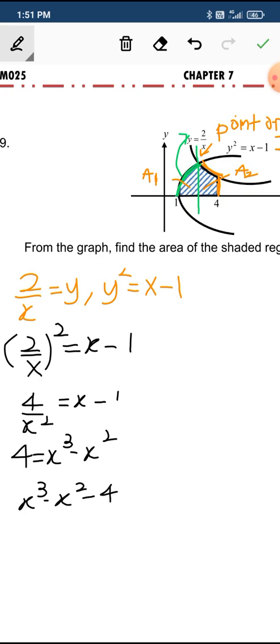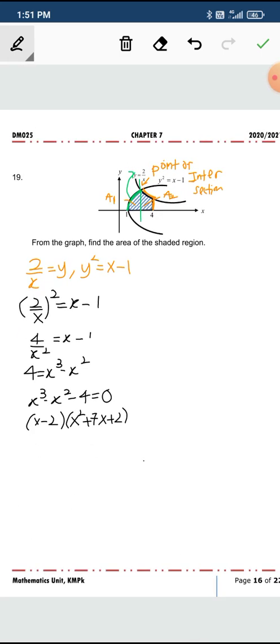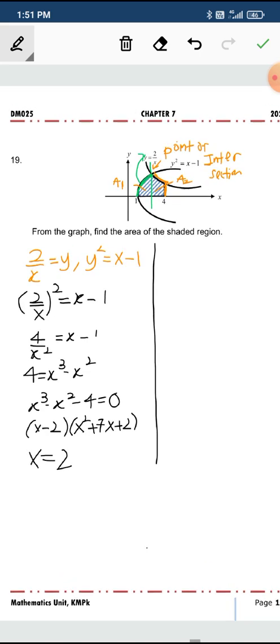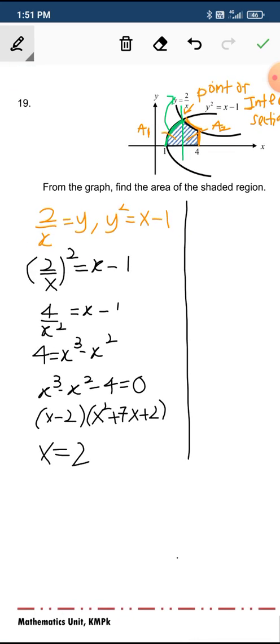You can use your calculator to factorize and you get something like this. So x is 2. If you look at here we know that x equals 2. Now we have to find the area.